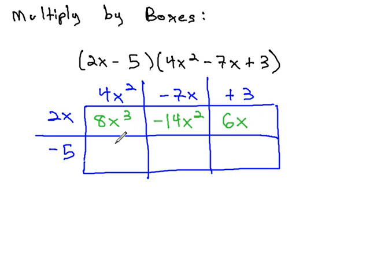Moving down to the second row, the first cell has negative 5 times 4x squared, which is negative 20x squared. The middle box has negative 5 times negative 7, which is positive 35x. The final cell has negative 5 times positive 3, which is negative 15.